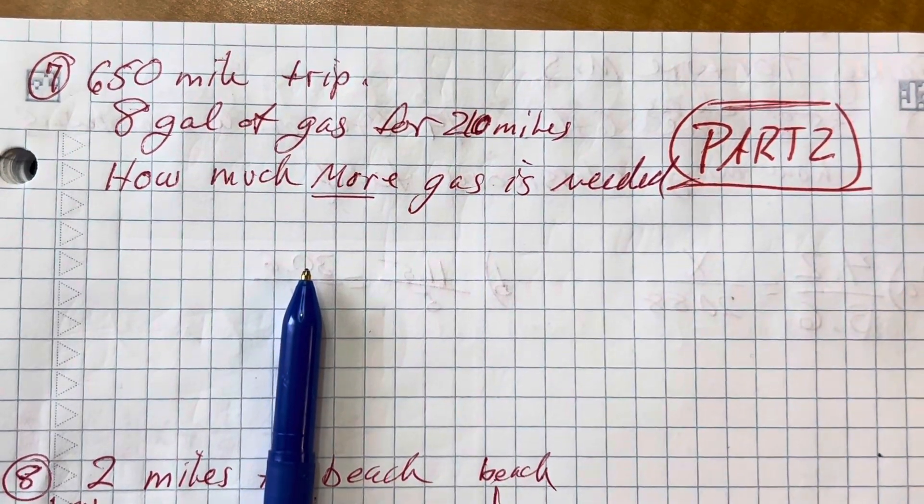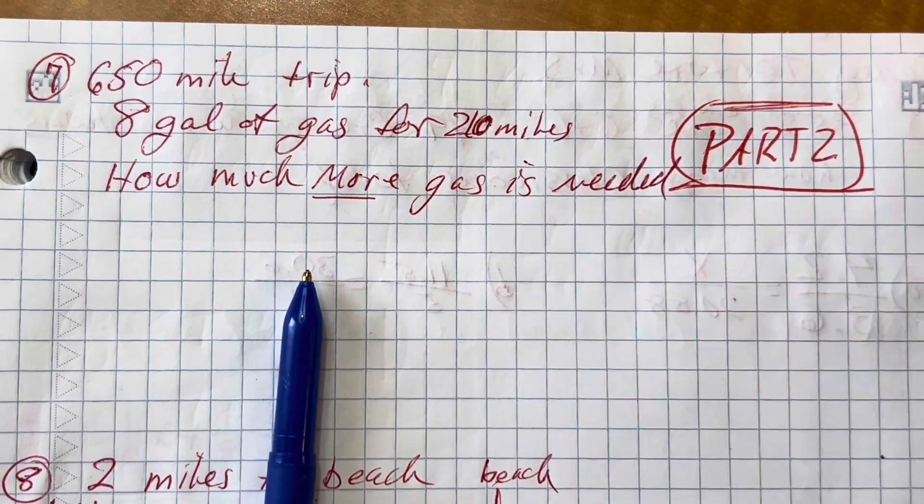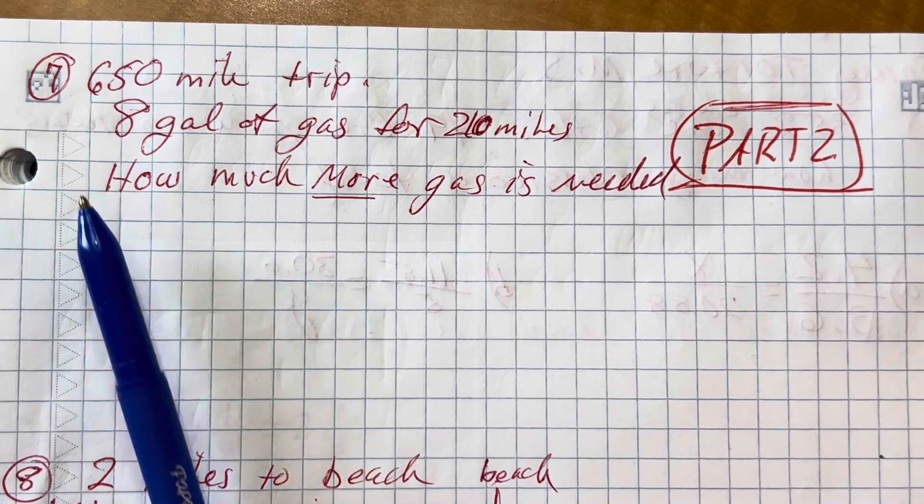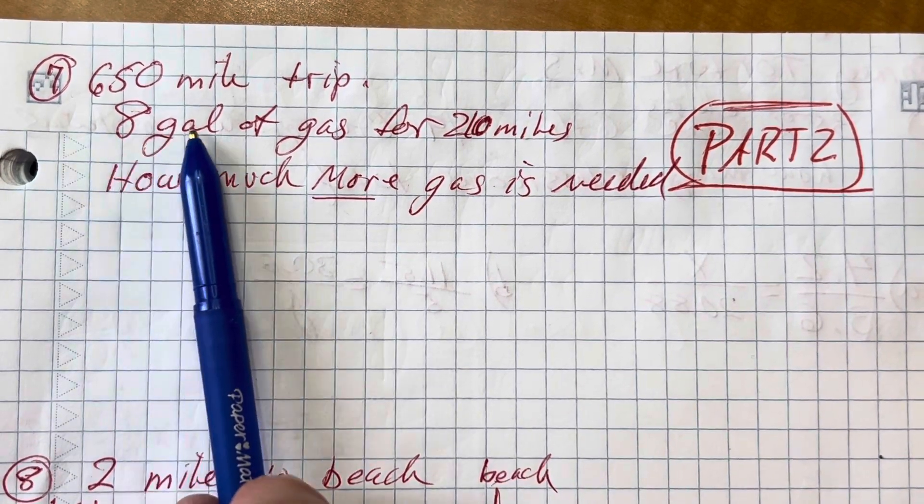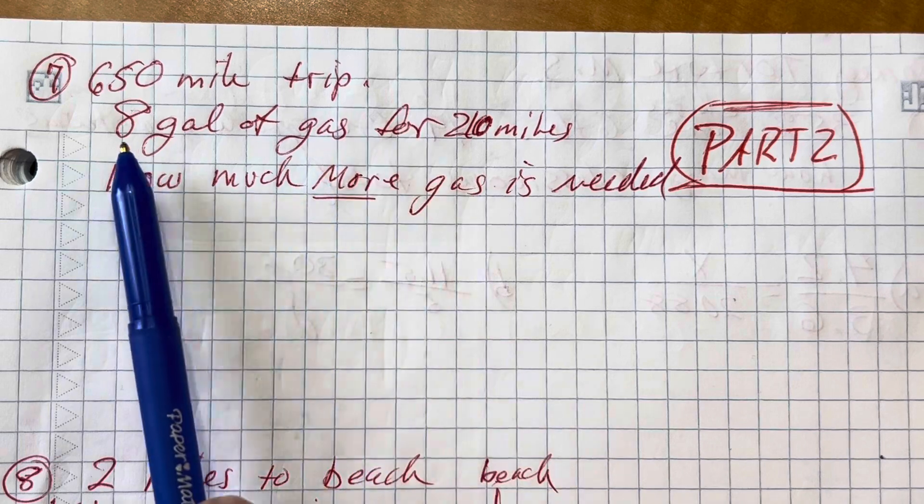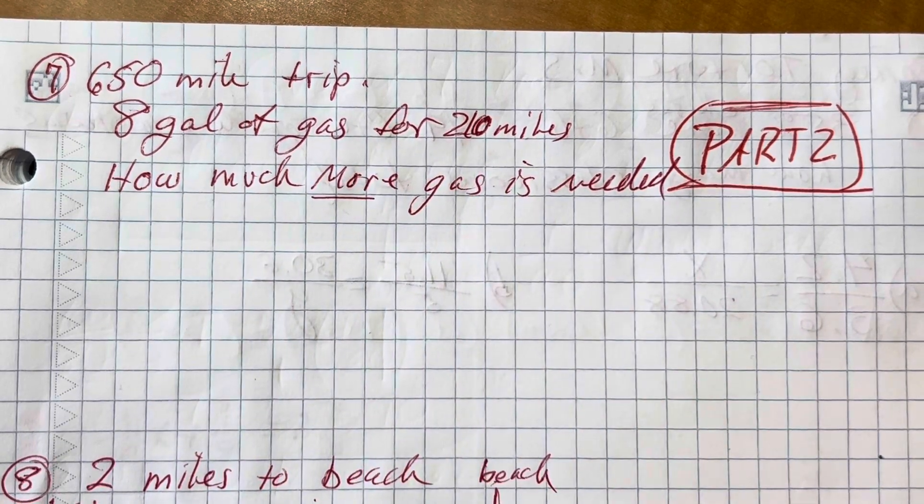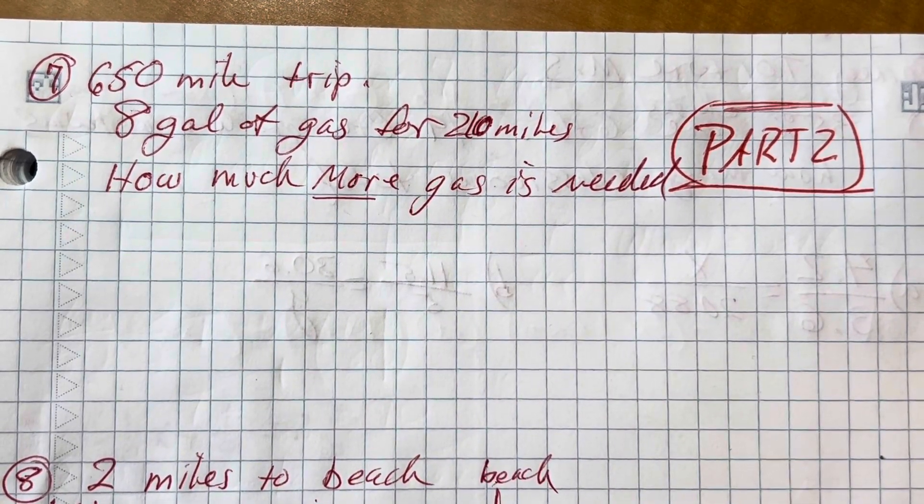All right, here we go for part two. We know that for my 650-mile road trip, eight gallons of gas gets us 210 miles. How much more gas is needed?